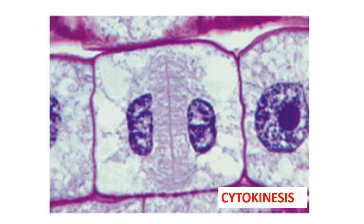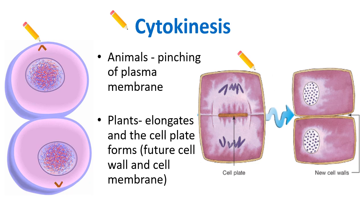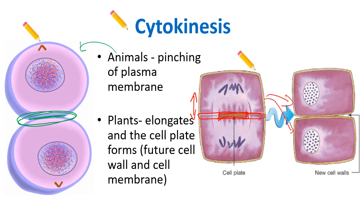Mitosis is finished, but we can't forget cytokinesis — the final stage of the actual cell division. In animal cells, special proteins pinch together and get smaller and smaller, pinching the plasma membrane until the cell breaks in half, creating two new cells. In plant cells, which have a rigid cell wall, the cell elongates instead, and a cell plate forms in the middle, building a brand new cell wall that extends all the way across, giving us two new plant cells.